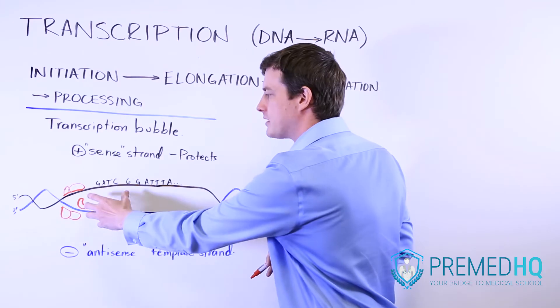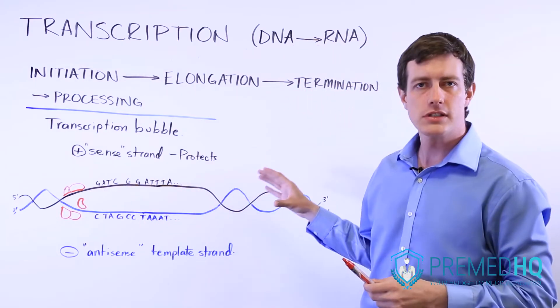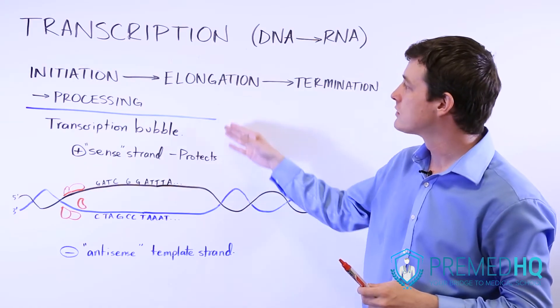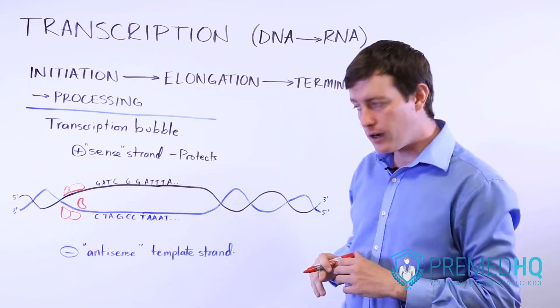And what happens now is that because this bubble has formed, we now have two different strands of DNA that are both going to serve very important roles in the elongation phase, which is what we're focusing on now.